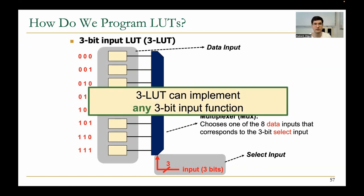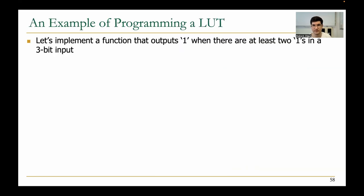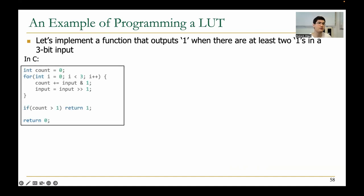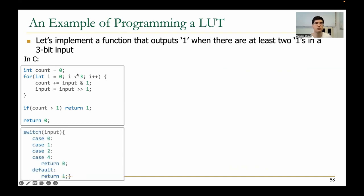A 3-LUT can implement any three-bit input function. We will implement a function that outputs one when there are at least two ones in a three-bit input. In C, you could loop over all the input bits and increment a count whenever you see a logic-one bit. You could also implement it using switch and case statements, enumerating all cases where you expect the function to output one or zero.